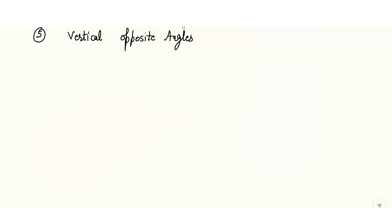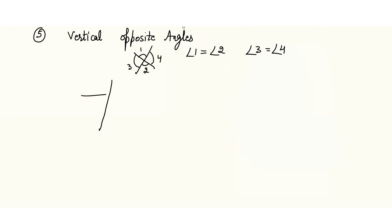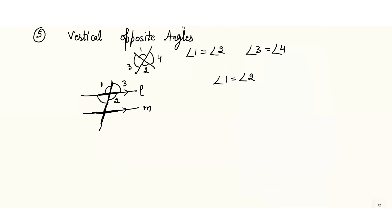Then we have another set of angles which are vertically opposite angles, and vertically opposite angles are always in a cross. That means angle 1 and angle 2 are vertically opposite, and angle 3 and angle 4 are also vertically opposite — so angle 1 equals angle 2, and angle 3 equals angle 4. In parallel lines with a transversal, there are two crosses. Angle 1 and angle 2 are vertically opposite, angle 3 and angle 4 are vertically opposite, angle 5 equals angle 6, and angle 7 equals angle 8.